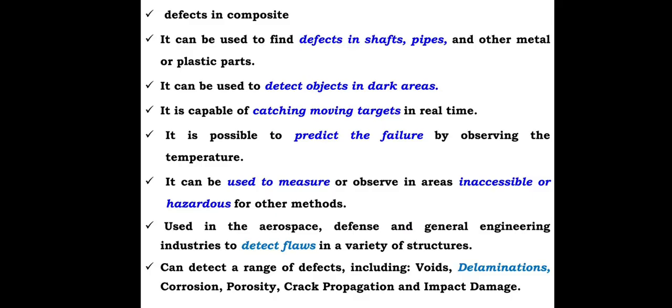Defects in composites. It can be used to find defects in shafts, pipes, and other metal or plastic parts. It can be used to detect objects in dark areas. It is capable of catching moving targets in real time. It is possible to predict failure by observing the temperature. It can be used to measure or observe in areas inaccessible or hazardous for other methods. Used in the aerospace, defense, and general engineering industries to detect flaws in a variety of structures. Can detect a range of defects including voids, delamination, corrosion, porosity, cracks, crack propagations, and impact damage.